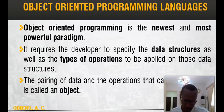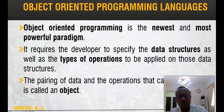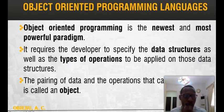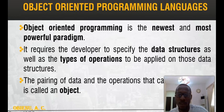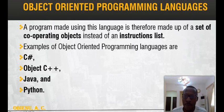For example, when you upload student data, an operation that can be performed is to allow people to view those data only — they don't have the liberty to alter the content unless you give them the privilege. So as the developer, you specify whether the user can modify the content or just view it. The pairing of data and its operations is done through an object. From the name 'object-oriented', programs are built as objects — several modules that can interact together to form a particular program.